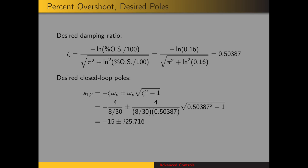Now we can figure out what the desired closed-loop poles are. Here's the equation for the poles in terms of zeta and omega_n. Substituting in, zeta over omega_n equals 4 divided by (8/30), and that gives us closed-loop poles at -15 on the real axis and ±25.7 in the imaginary direction.